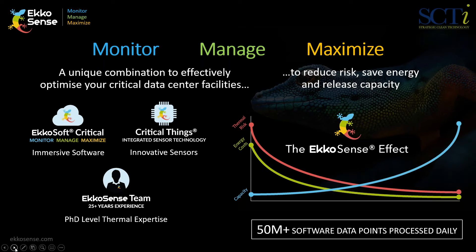Cooling is obviously a huge consumer of energy — typically quoted at 35 percent in most reference guides — but we often find the true figure is much higher. In terms of risk, there is always at least one or two areas of very high risk when we look at the data. Typically, we see at least 15 percent of racks are outside of ASHRAE guidelines for inlet temperatures. Also, roughly a third of all unplanned outages are down to some kind of thermal or cooling issue.